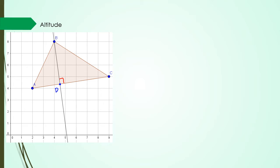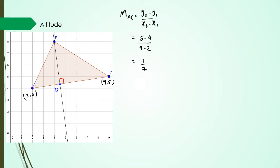Gradient of AC equals (y₂ − y₁) / (x₂ − x₁). Looking at the points, I've got C as (9, 5) and A as (2, 4), so the gradient is (5 − 4) / (9 − 2) = 1/7. Since AC's gradient is 1/7, to find the perpendicular line BD, the gradient of BD equals −1 divided by the gradient of AC, which is −1 ÷ (1/7) = −7.